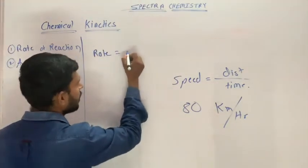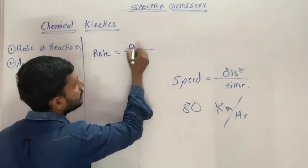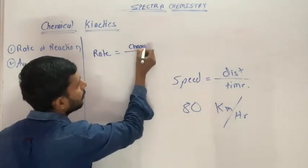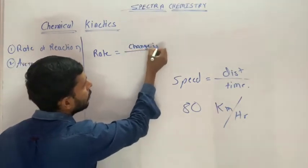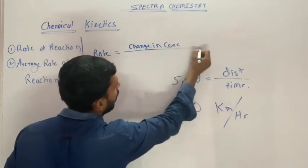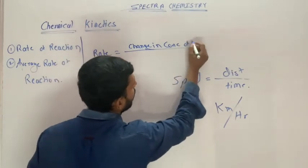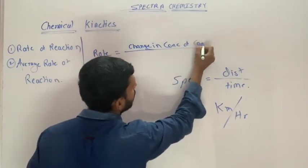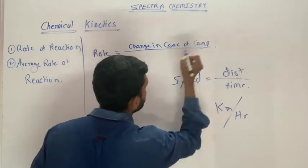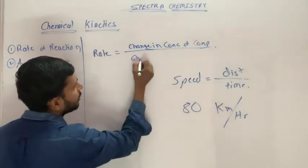Normally, rate is equal to change in concentration of a component divided by change in time.